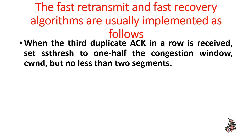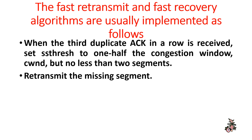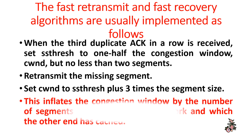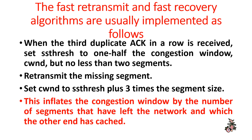When the third duplicate ACK in a row is received: set ssthresh to one half the congestion window (cwnd), but no less than two segments. Retransmit the missing segment. Set the congestion window to ssthresh plus three times the segment size. This inflates the congestion window by the number of segments that have left the network and which the other end has cached.